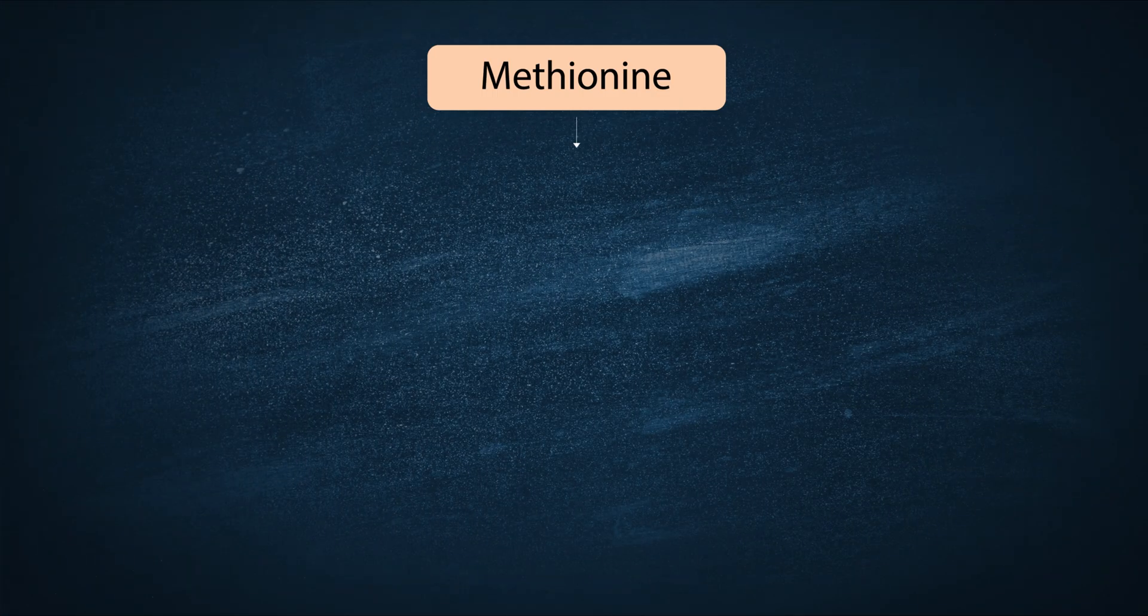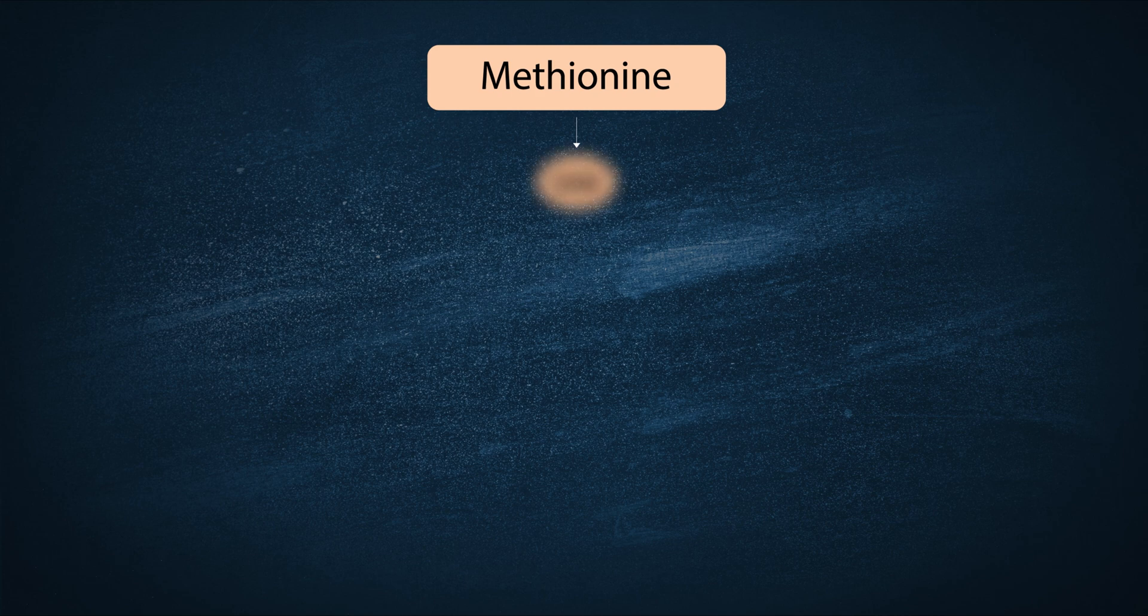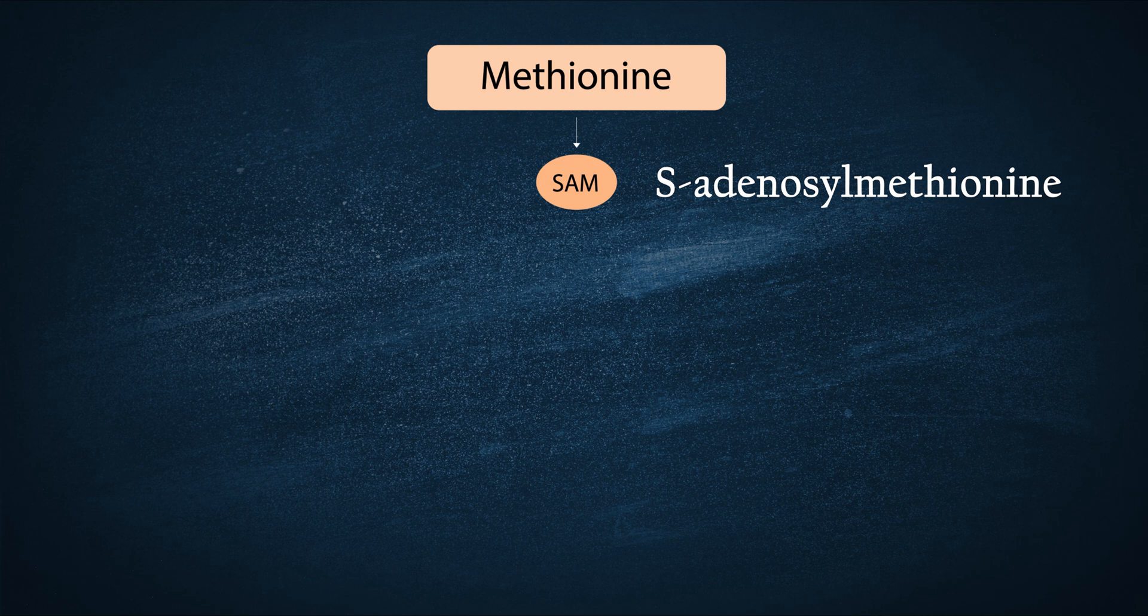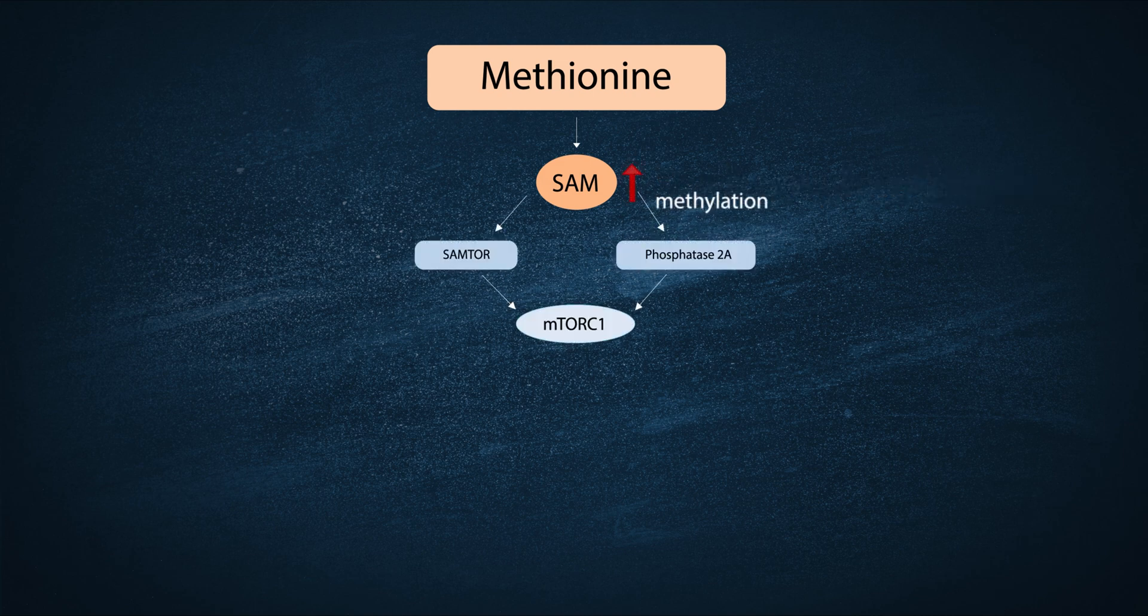When methionine is consumed in a diet, it's typically broken down and metabolized into S-adenosylmethionine, which we'll just call SAM for short, which in turn stimulates SAMTOR and Phosphatase-2A, which then go on to activate mTOR.